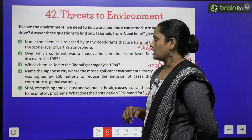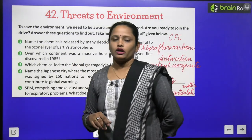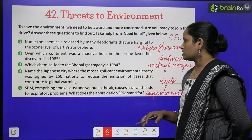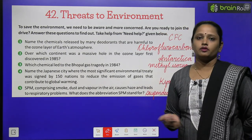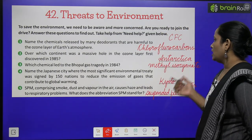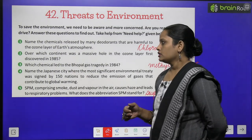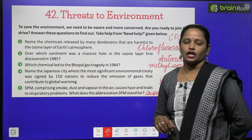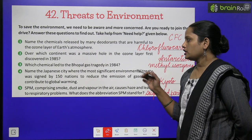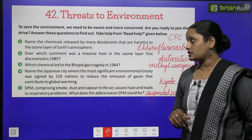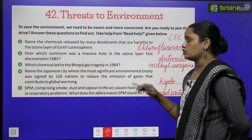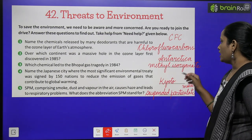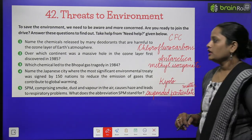First discovered in 1985 — 1985 mein pehli baar ozone layer depletion dikhahi diya. Wo kaunse continent mein dikhahi diya? Wo tha Antarctica. Third one: which chemical led to the Bhopal gas tragedy in 1984? 1984 mein jo Bhopal gas tragedy hoi thi, us mein kaunsa chemical tha? Us mein tha methyl isocyanate.